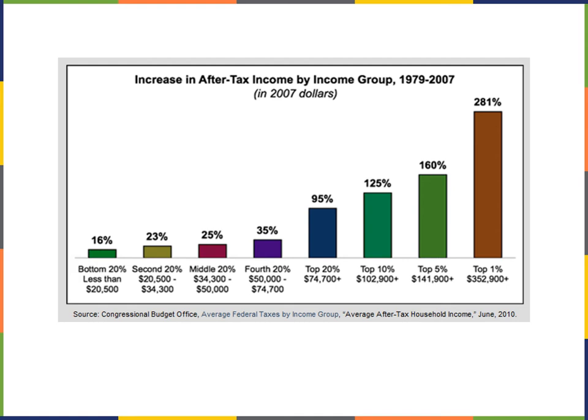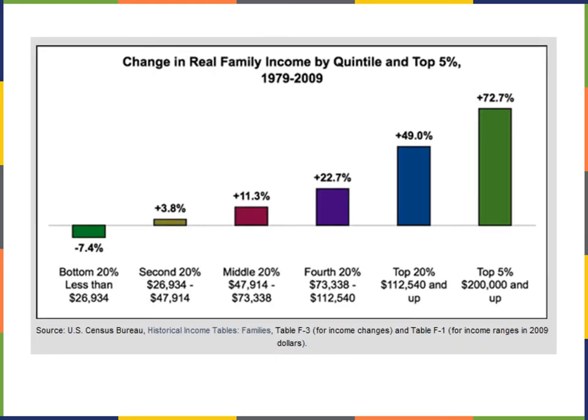Here's a bar chart showing an increase in after-tax income by income group. This one is actually a Pareto chart where it is sorted in ascending order — smallest on the left and highest on the right. This chart also shows a change in family income and is also sorted. When you see bar charts, we typically like to see these sorted from smallest to largest or largest to smallest in terms of the size of the bar.